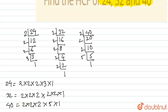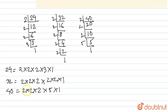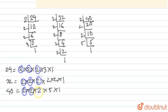Here the question asks us to find the HCF, that is the highest common factor. Let us see what are the common numbers in all three. You can see that 2 is there in 24, also in 32, and also in 40. Again, another 2 is there in 24, in 32 and in 40. Another 2 is also there in 24, in 32 and in 40. The number 3 is there in 24 but not in 32 and 40. And 1 is there in all three numbers.